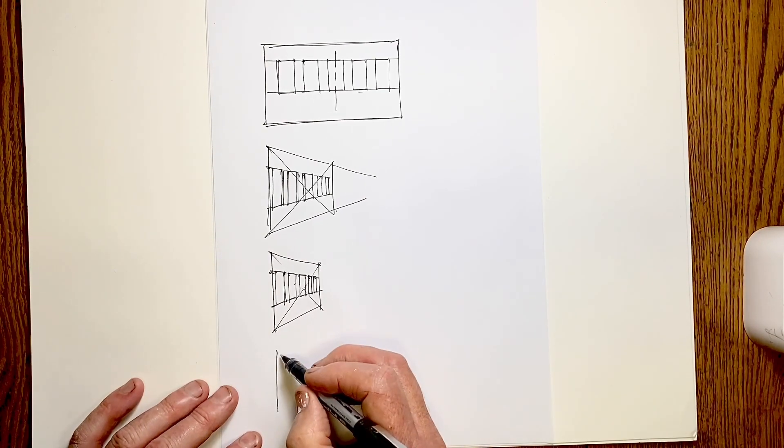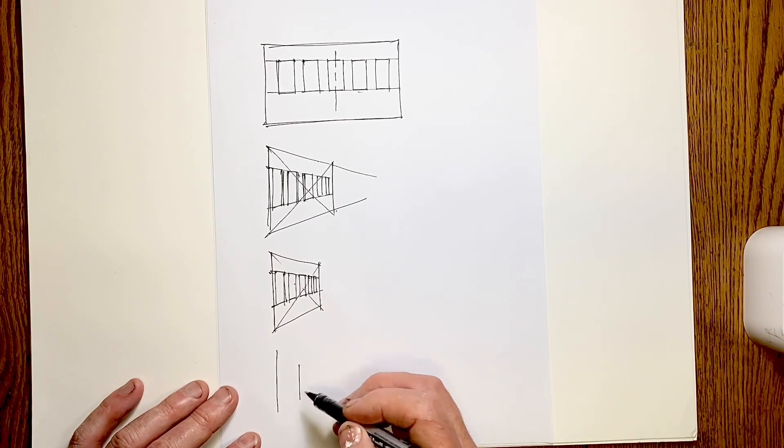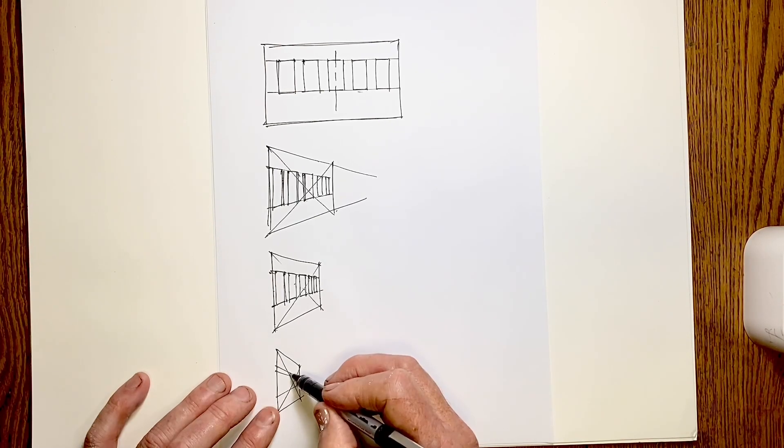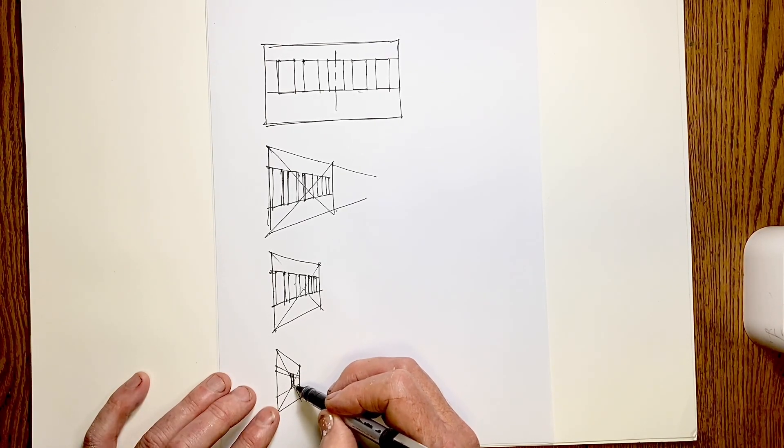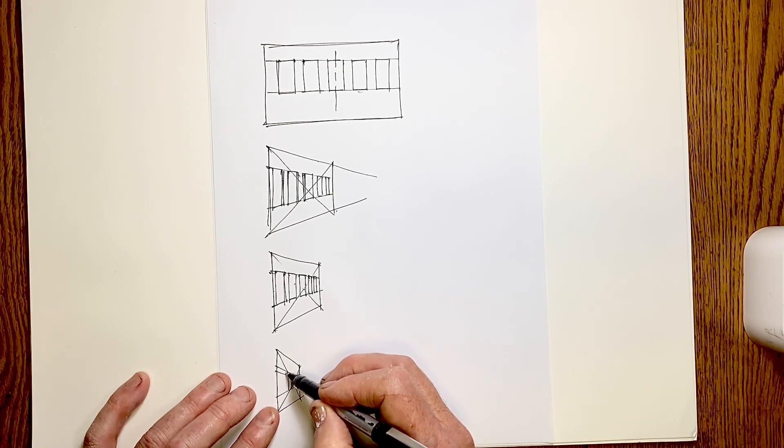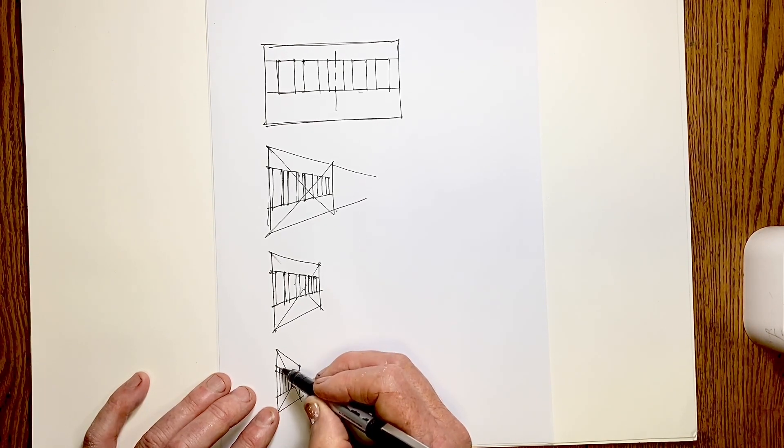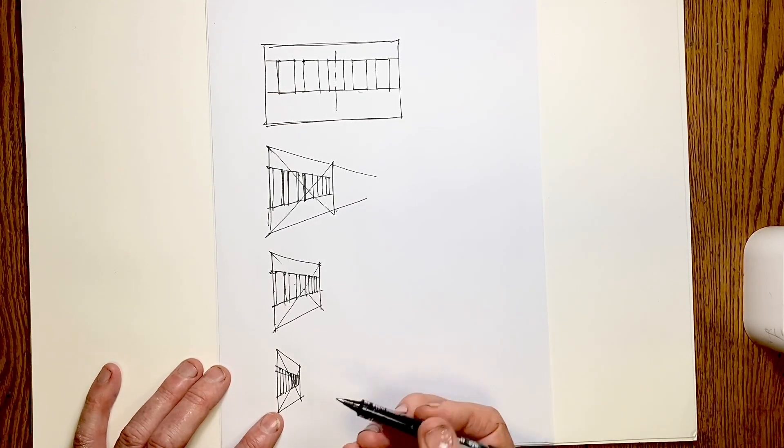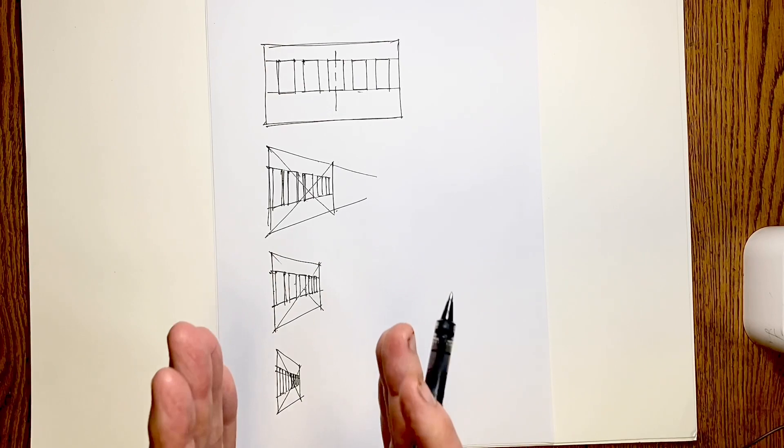We will do just one more and we'll make it quite compressed. Okay, so here is our center one. It's becoming difficult to draw the further ones because my pen's too thick to draw two lines.